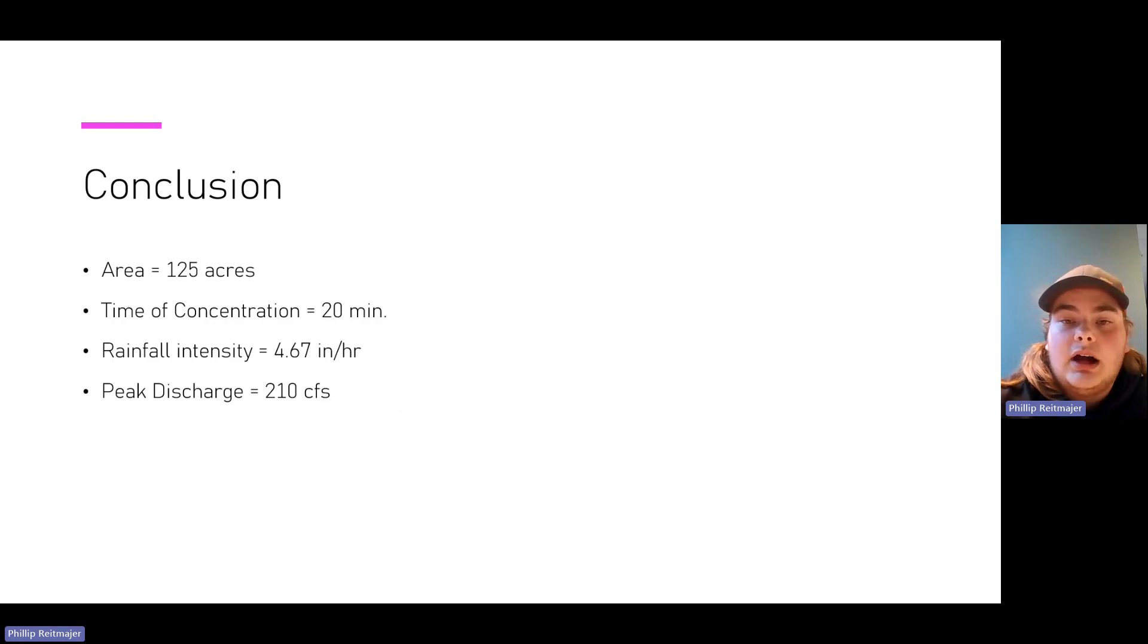In conclusion, our objectives were to find the area, which was 125 acres. The time of concentration is 20 minutes. The rainfall intensity is 4.67 inches an hour in that area. And then the peak discharge of my sub-watershed at 210 cubic feet per second.